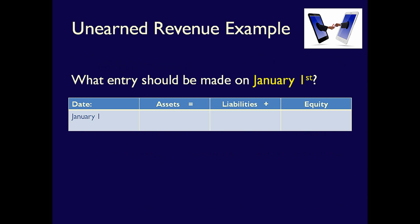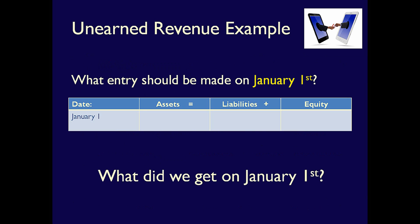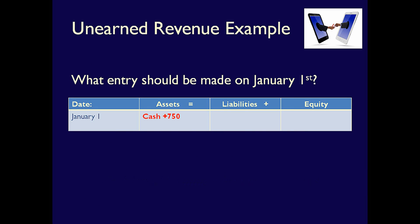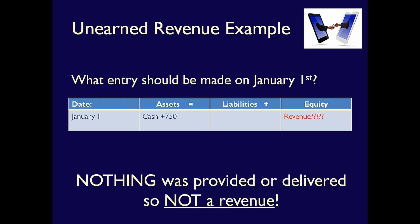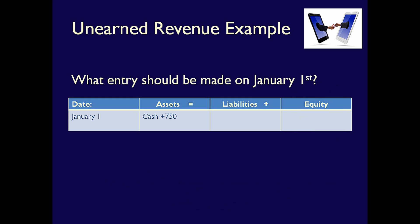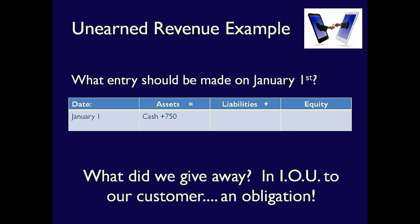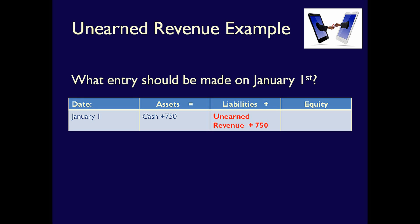Whenever we look at a transaction, we have to ask ourselves: what did we give up, and what did we get? We received cash of $750, which means assets increased by $750. Did we earn anything? When we receive cash, students often assume that revenue is on the other side, but the question is: did we earn anything? Cash doesn't indicate what we earned — we have to ask what we did for the customer. In this case, the answer is nothing. Because we didn't do anything, we can't record a revenue. What did we give away? We gave away an IOU — an obligation, a liability in the future. Because of that, we have to record a liability, unearned revenue, under the element liabilities.